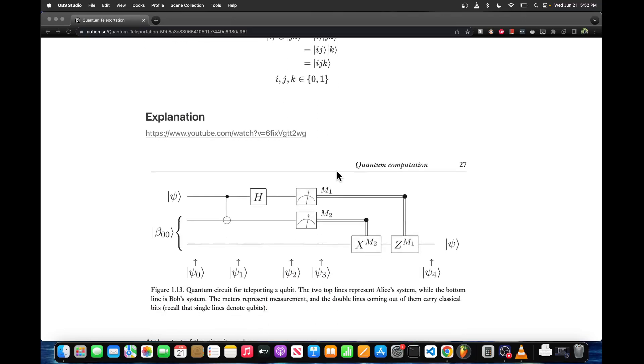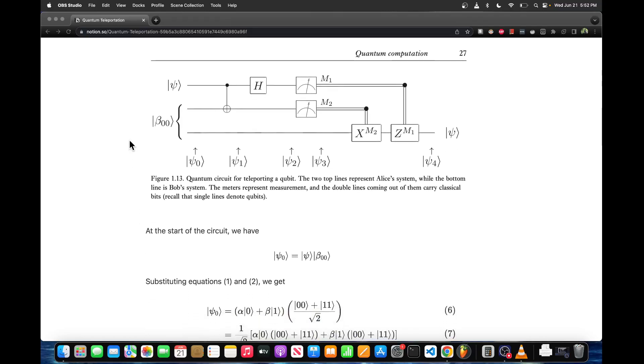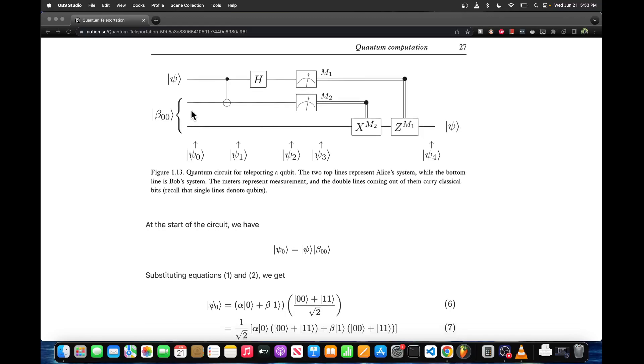So onto the circuit. Recall last time we have three qubits. Qubit 0 and qubit 1 belong to Alice, and qubit 2 belongs to Bob. The way this works is Alice wants to send qubit 0 to Bob, and she does that by sending it through qubit 1. Because qubit 1 is entangled with qubit 2, Bob will get it on qubit 2. Qubit 1 and qubit 2 are entangled in the Bell state.